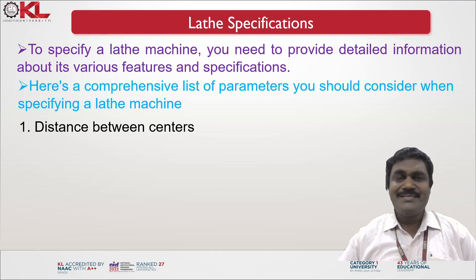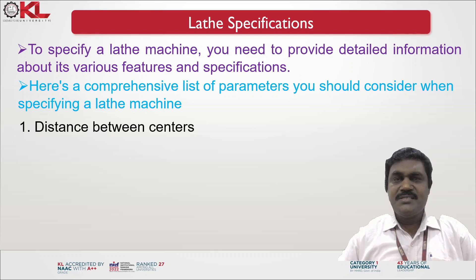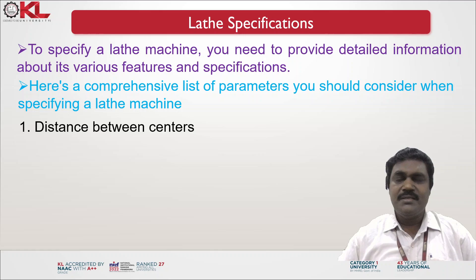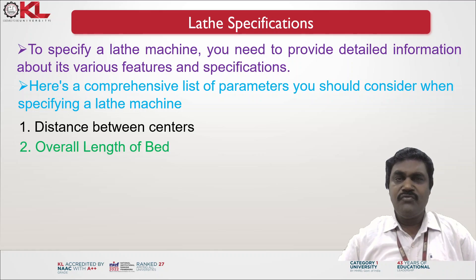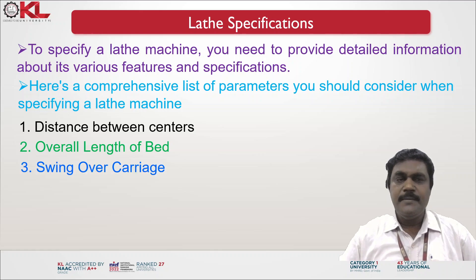The first parameter is the distance between centers. In the lathe machine, there is a live center and a dead center. The distance between these two centers is a main requirement. That is the distance between centers and the overall length of the bed for a lathe machine — the overall length of the machine that you are going to specify.